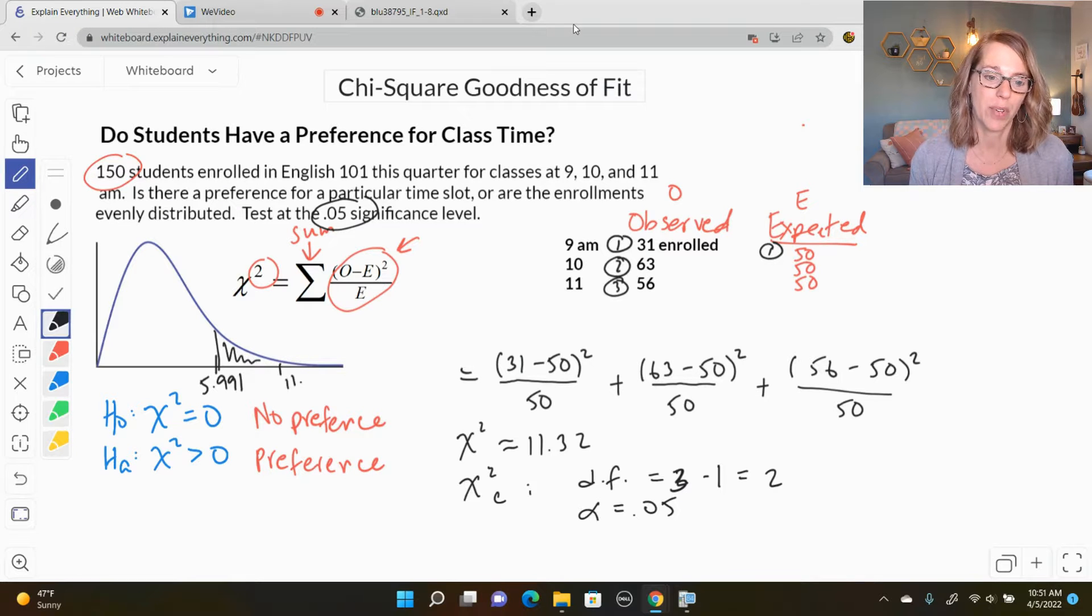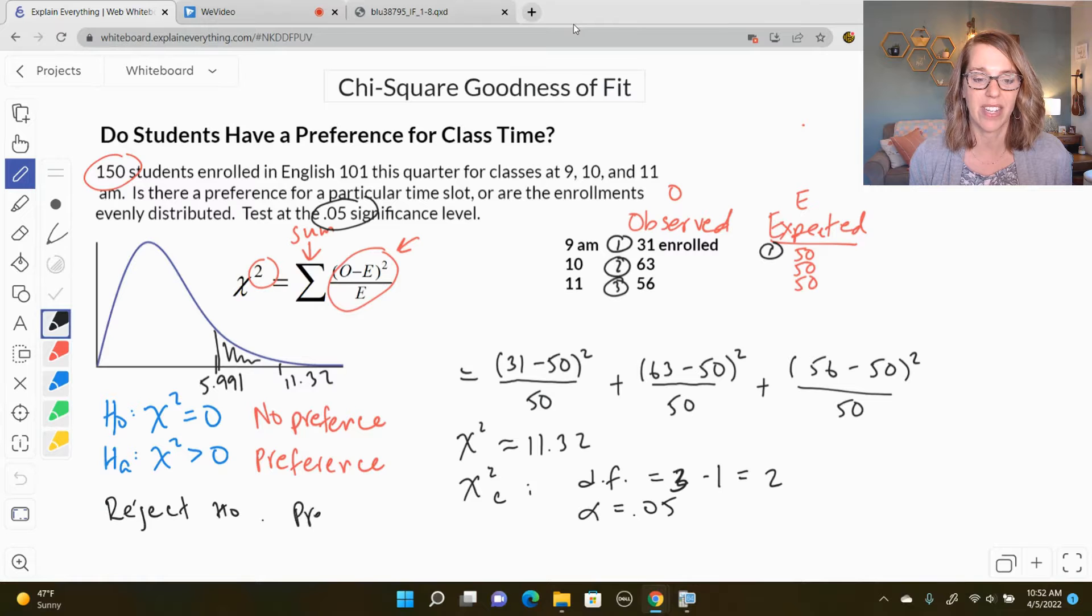11.32 lives within that rejection region. So we are going to conclude that we reject our hypothesis. And we have found a significant preference.